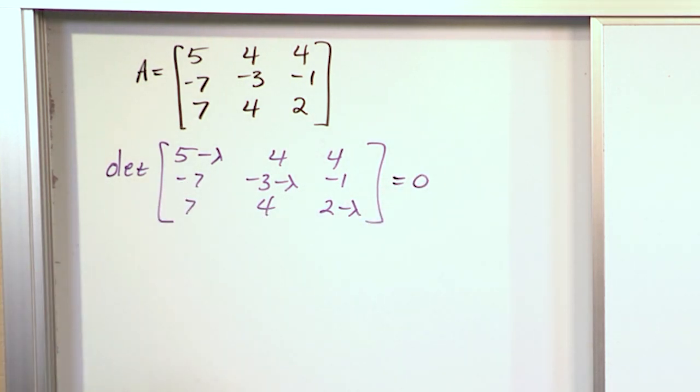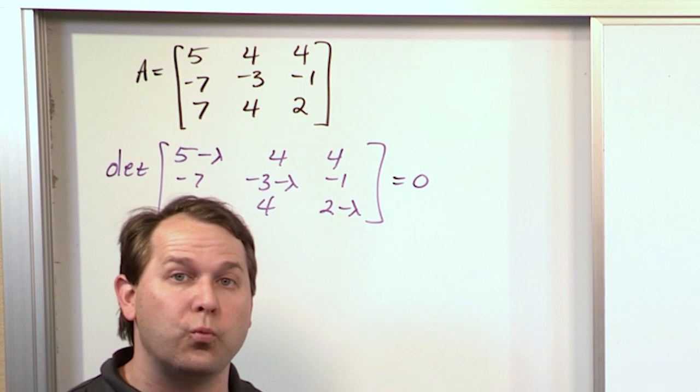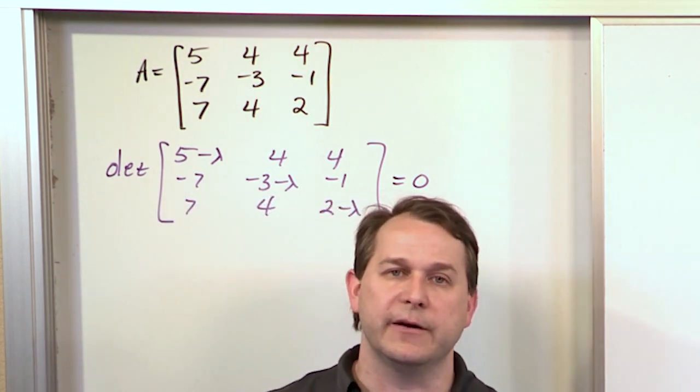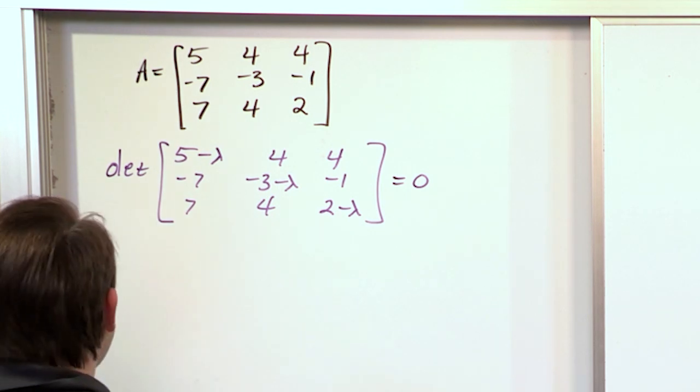Now you can immediately see how much more work you have in front of you. You have to find the determinant of this three by three, which is a lot more work than finding the determinant of two by two. Everything increases in complexity, but you know how to do this.